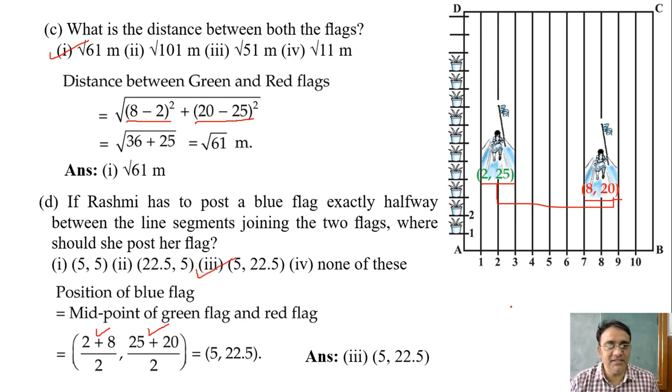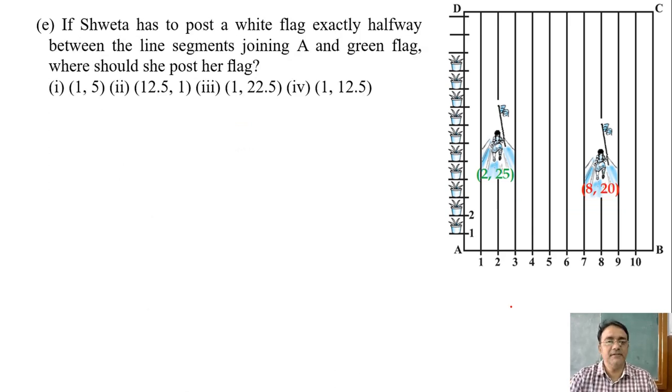So now we will move towards the last question. If Shweta has to post a white flag exactly halfway between the line segment joining A and green flag. So green flag coordinates 2, 25. What is the coordinate of A? 0, 0.